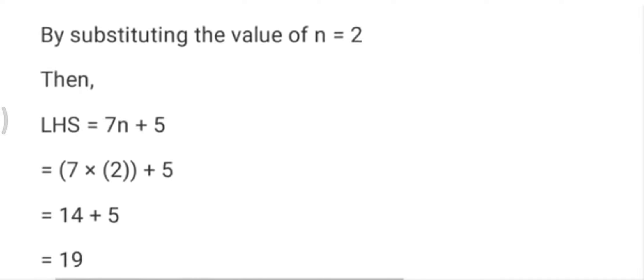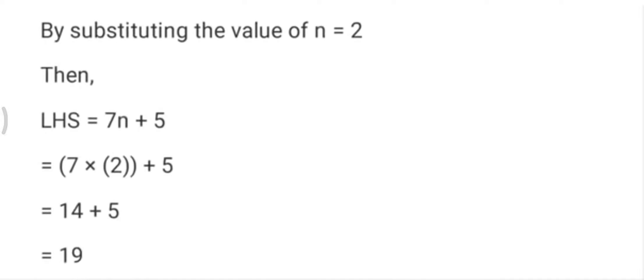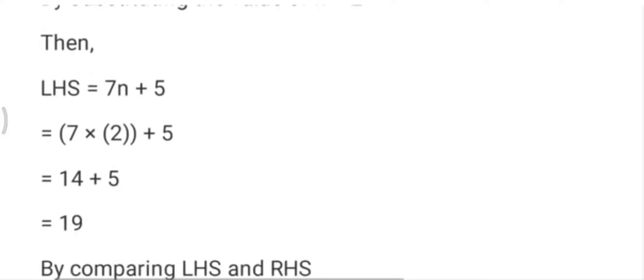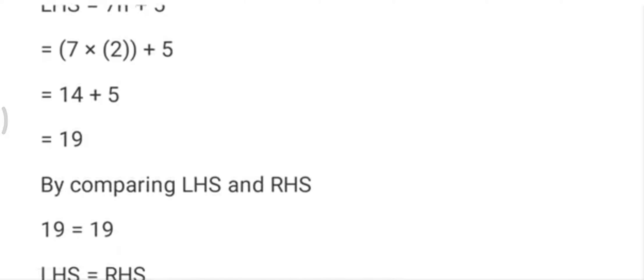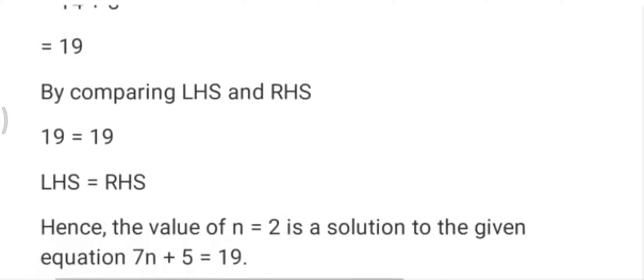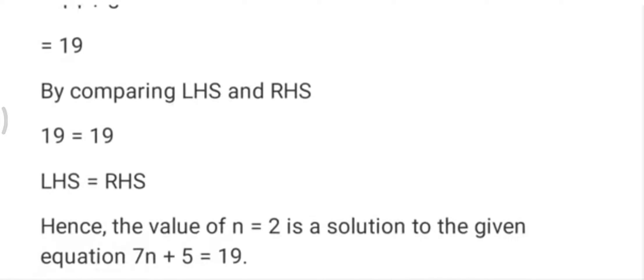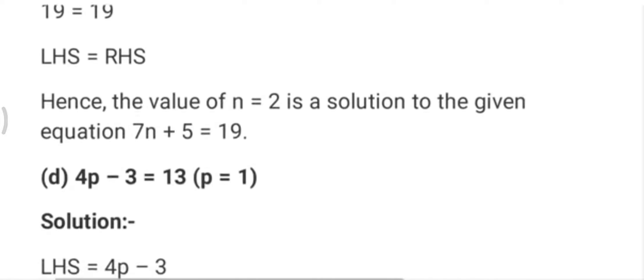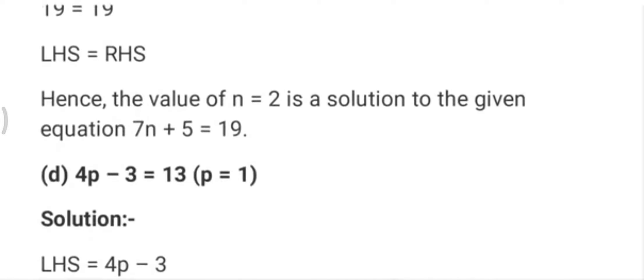In part c, we put n=2. So 7 into 2 is 14, plus 5 is 19. The right-hand side is also 19, so 19=19. We write yes — n=2 is the solution of the equation.